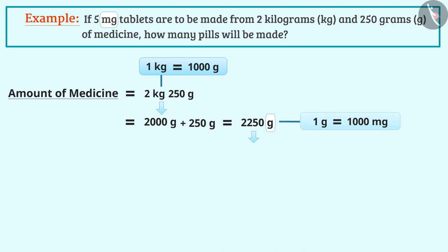so 2250 g will be 2250 times 1000 mg, i.e. 2,250,000 mg.